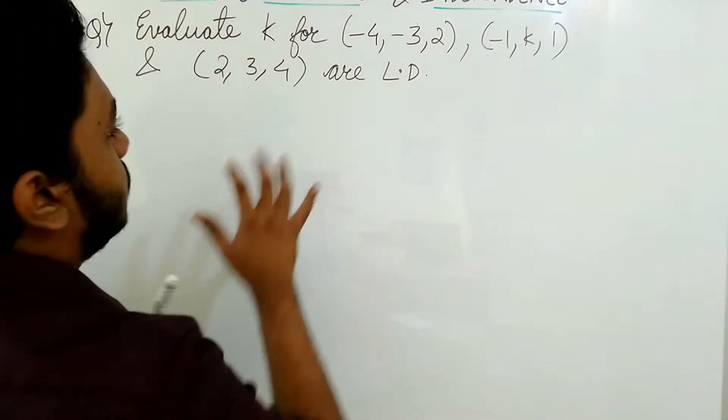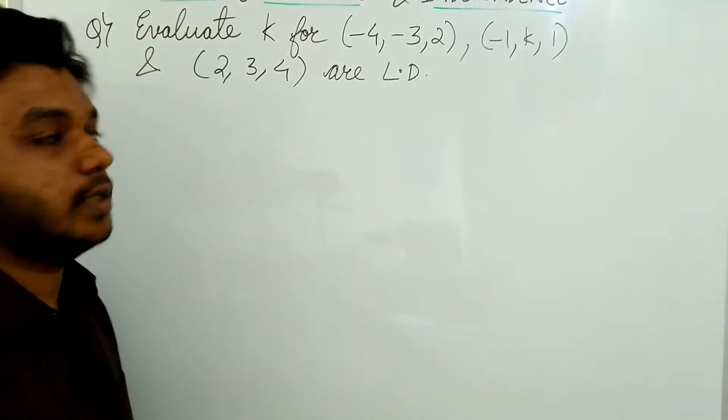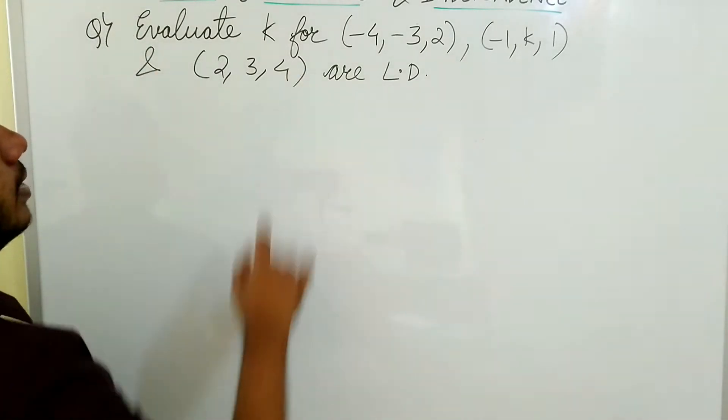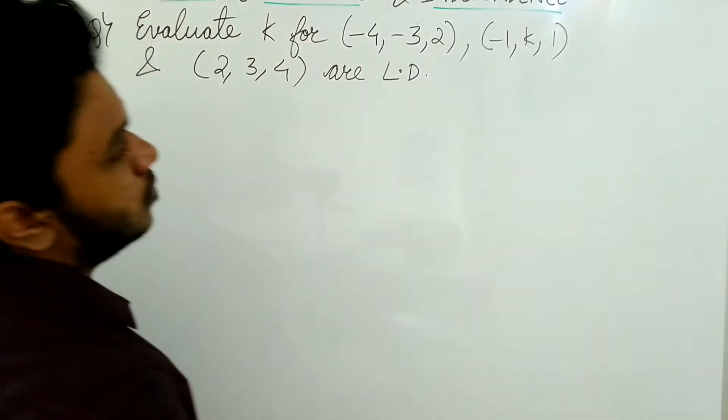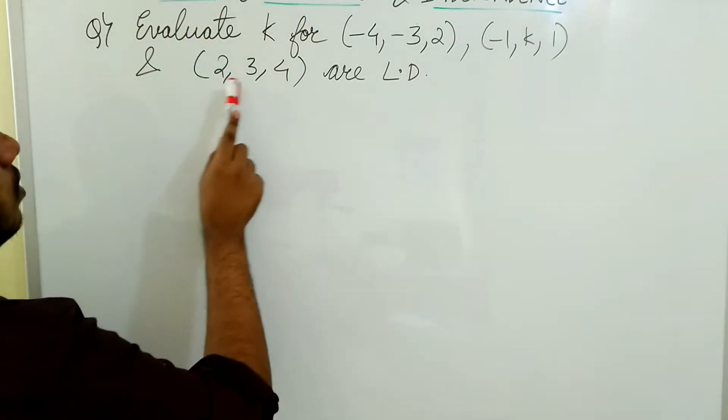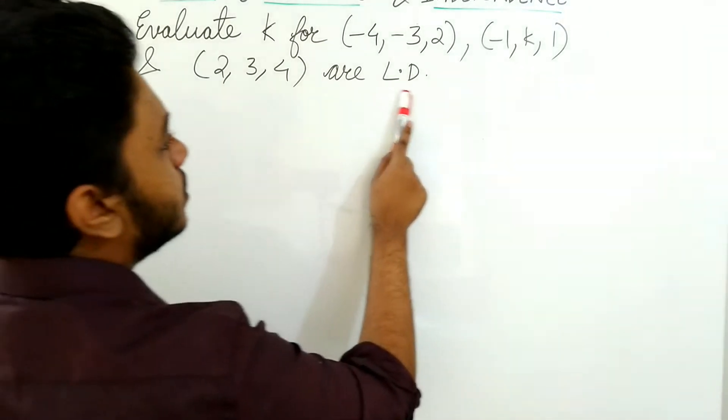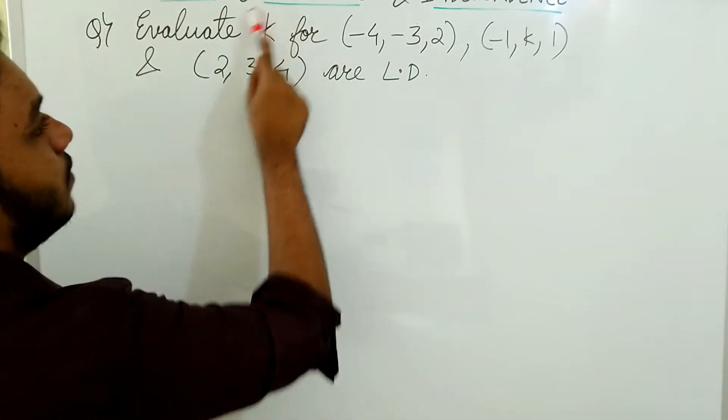In this video, we will be solving one more problem based on linear dependent and linear independent. So here, evaluate k for vectors (-4, -3, 2), (-1, k, 1), and (2, 3, 4). It is given that they are linearly dependent, so we need to find the value of k.